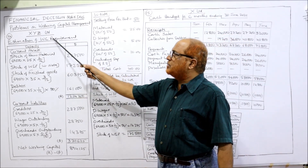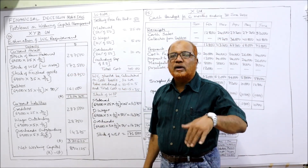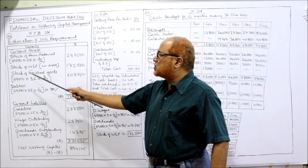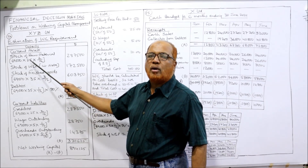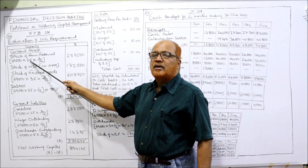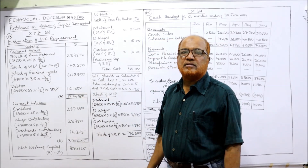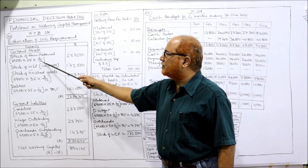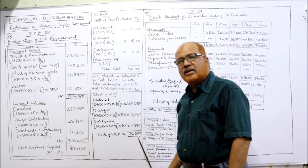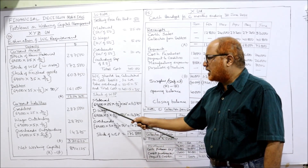Now we start estimation of working capital requirement. Stock of raw material: 69,000 units into raw material cost per unit 25 rupees, into the material storage period of two months, that is 2 by 12. Then stock of work in progress: in the working note we calculate WIP — material: 69,000 units into 25 rupees into 1 by 12 (production process of one month).